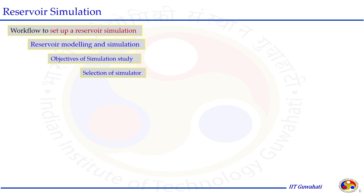The workflow to set up a reservoir simulation — part of reservoir modeling — begins by setting up the objective of the study. For example, whether we want to forecast the production profile, understand reservoir domain behavior, see how the reservoir performs under different configurations, or implement primary to secondary or secondary to tertiary recovery. The objective of the simulation study must be clearly defined, followed by selection of the simulator.